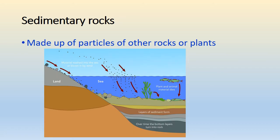Sedimentary rocks are made up of particles of other rocks or plants. They form over a long time period, starting when rivers carry rock particles into the sea. The rock particles and dead parts of flora and fauna form a sediment at the bottom of the sea. Over time, the sediment particles stick together to form sedimentary rock.